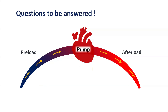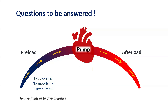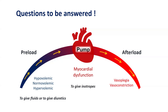The questions to be answered while monitoring these patients are: is the child hypovolemic, normovolemic, or hypervolemic, so that we can decide on giving fluids or diuretics. If there is myocardial dysfunction, we can start inotropes, or we can titrate the afterload in cases of vasoplegia or vasoconstriction by giving either vasopressors or vasodilators.